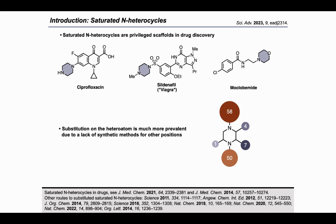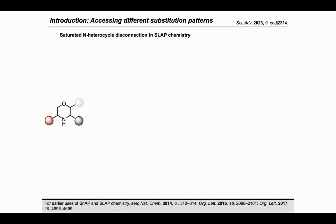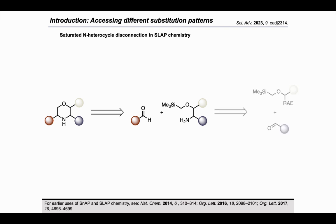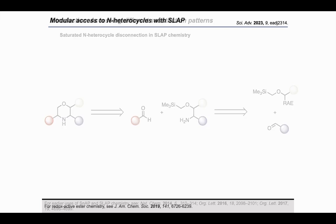With SLAB chemistry, one of the initial aims was to achieve different substitution patterns on saturated N-heterocycles. In this work, we focus on morpholines and piperazines. To achieve the desired substitution pattern, we make two disconnects: the first splits the molecule into an aldehyde and what we call the SLAB reagent, and the second disconnect splits the SLAB reagent into another aldehyde or ketone and a redox-active ester. Now let's go in the forward direction.